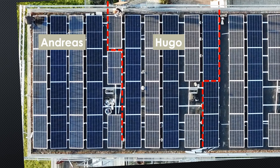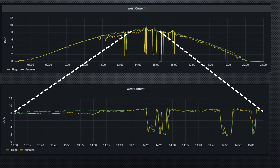For this video, I will concentrate on my west string, which contains ten panels in series. Hugo's west string only contains eight panels, so we will see a difference in power. But because all west panels point precisely in the same direction and are mounted on the same roof, they should deliver the same current — which is true as we see here. The sun changed many times this day, but Hugo's and my string produced nearly the same current.